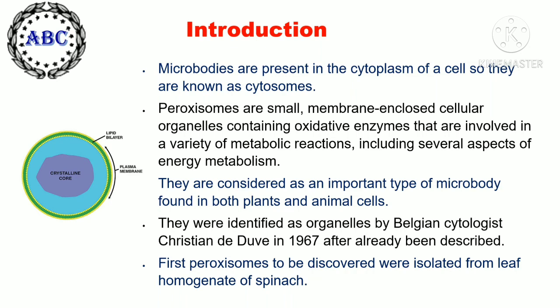They were identified as organelles by Belgian cytologist Christian de Duve in 1967. The first peroxisomes to be discovered were isolated from leaf homogenate of spinach.